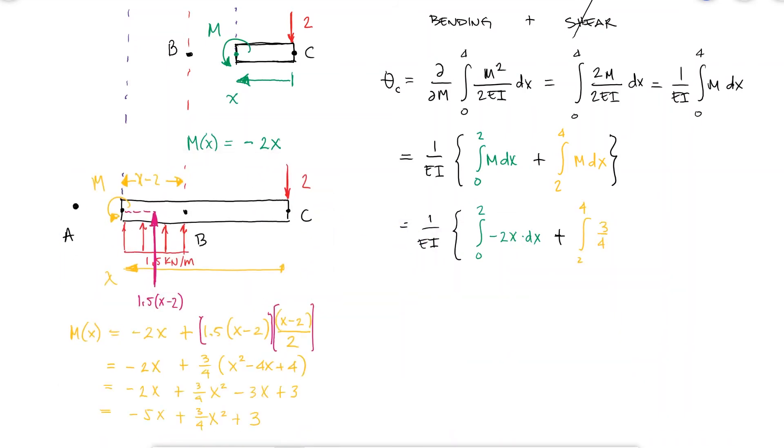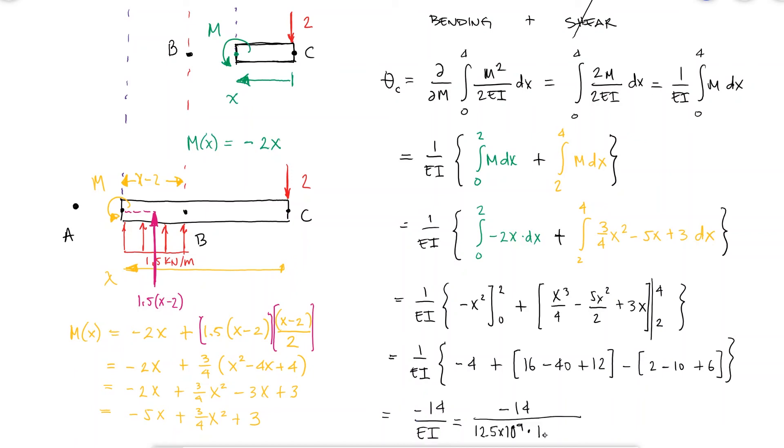Simplifying this expression and carrying out the integrals, we can substitute the values for the elastic modulus and the second moment of area to find that the angle is minus 0.0082 radians, which coincides with the result that we got back then.